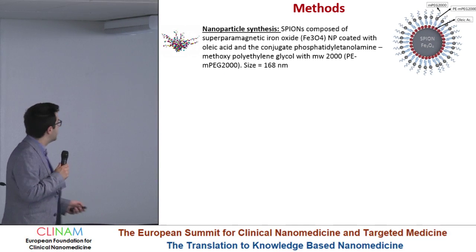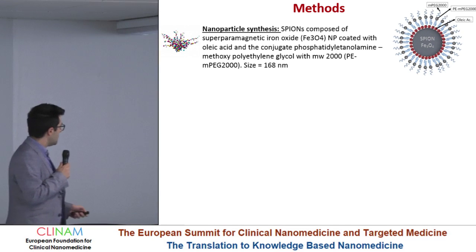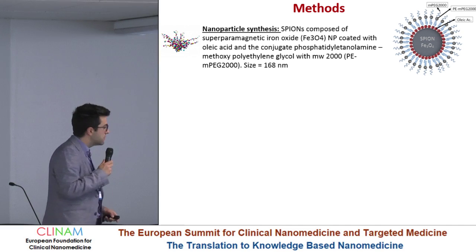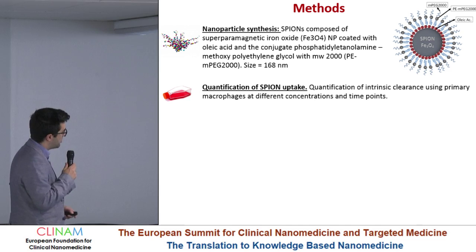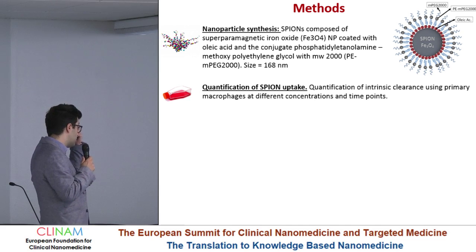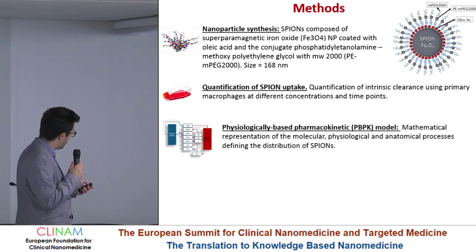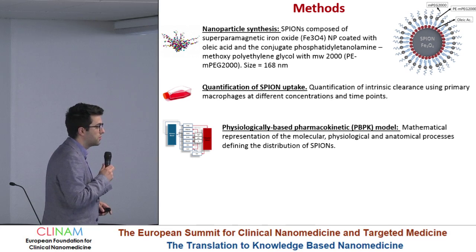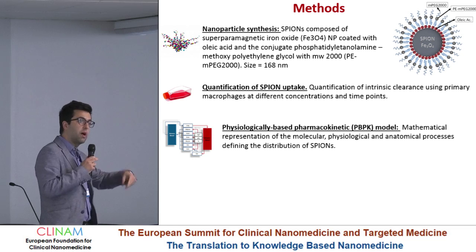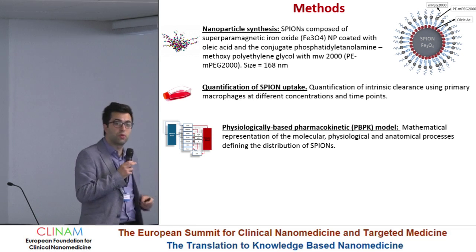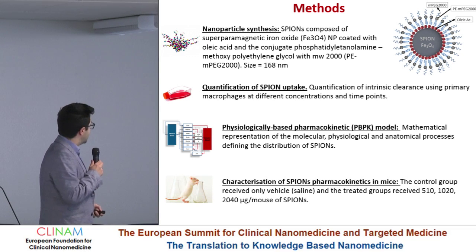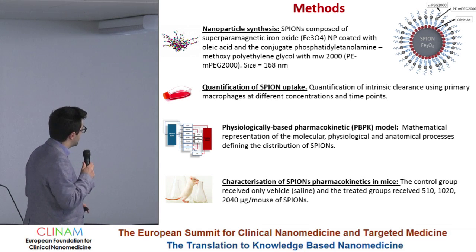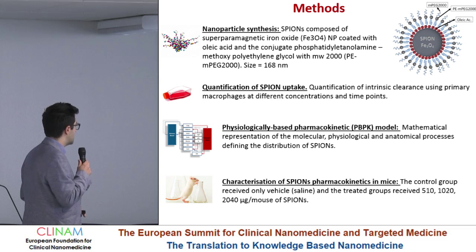To summarize the methods: we synthesized the nanoparticles, which are coated with oleic acid and PEG, and they have a diameter of 168 nanometers. Then we quantified the SPION uptake in primary macrophages at different concentrations and different time points. We integrated the findings of these experiments in a mathematical model describing anatomical and physiological processes, also using previously published data to describe penetration through capillaries. We then compared the results of our model with in vivo accumulation studies of SPIONs in mice receiving three different doses.